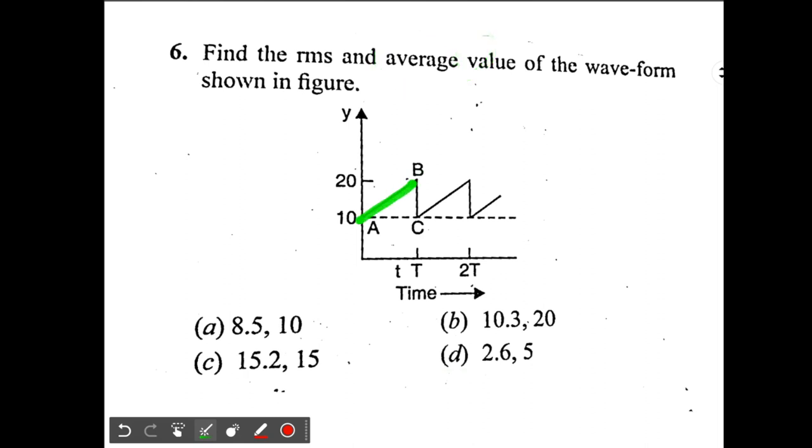First, I'll use the quick shortcut to solve this question. For straight line graphs, the average value can be simply found by looking at the middle point. The middle point over here is the average of 20 and 10, that will be 15. So the average value is 15 ampere, so option C will be correct. That's it, solved.